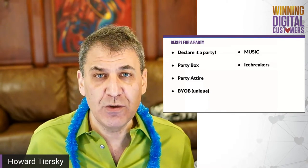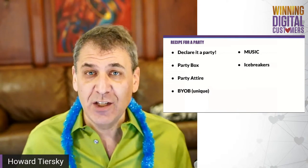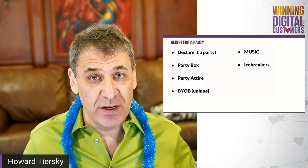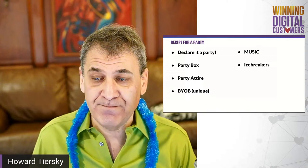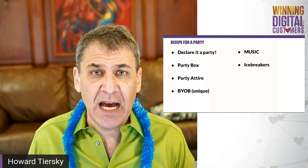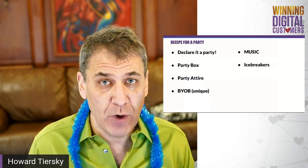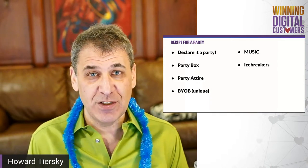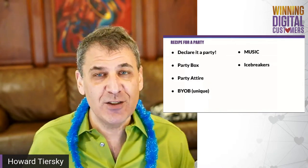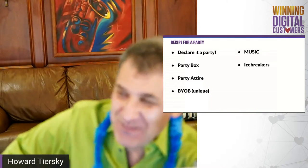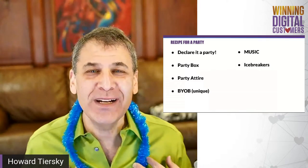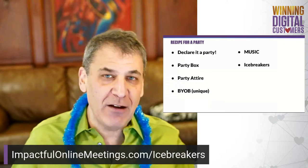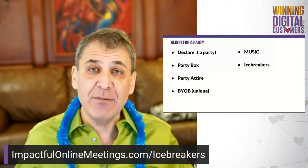In our training course we have a deck with 50 or 60 different ice breakers. Another example is Two Truths and a Lie — most of you probably know the game. One person says two truths and a lie about themselves and then everyone has to guess which one is the lie. For example: I grew up in Chicago; I was once on the game show Win Lose or Draw with Bert Convy in the 80s; and I am a certified scuba diver. The audience has to try to guess, and you can see how it's fun — people are shouting and laughing.